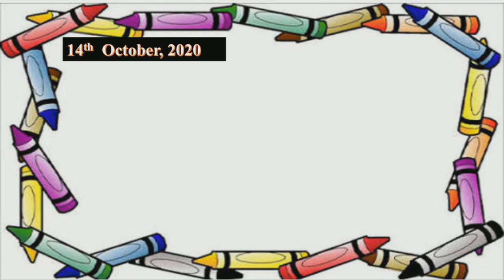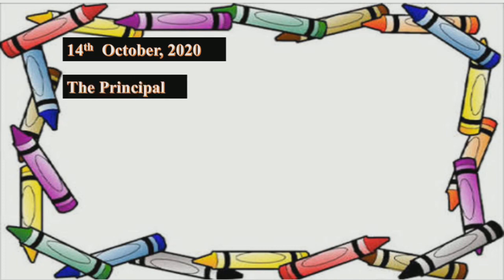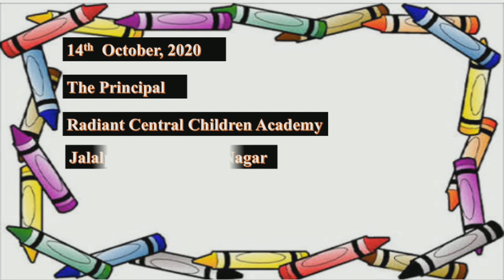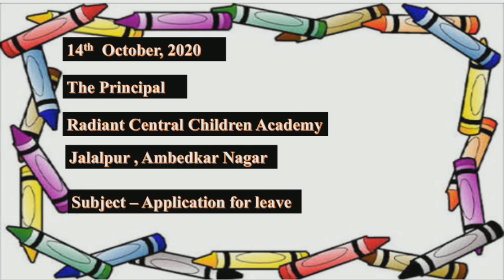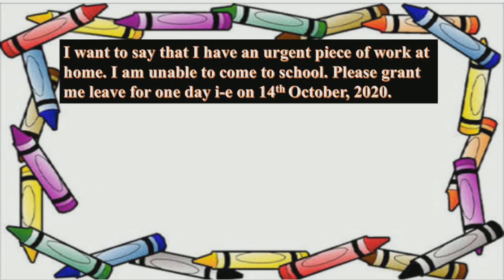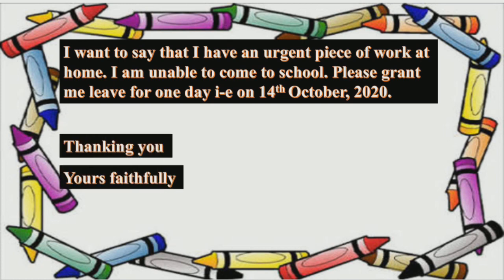Suppose today is 14th October, so I write: 14th October 2020. The Principal, Radiant Central Children's Academy, Jalalpur, Ambitkanagar. Subject: Application for leave. Sir, I want to say that I have an urgent piece of work at home. I am unable to come to school. Please grant me leave for one day, that is on 14th October 2020. Thanking you. Yours faithfully. Kaira. Second B. You have to mention your name and class.